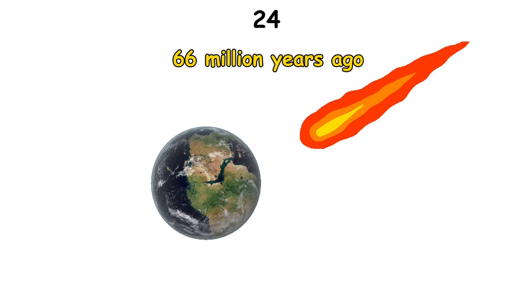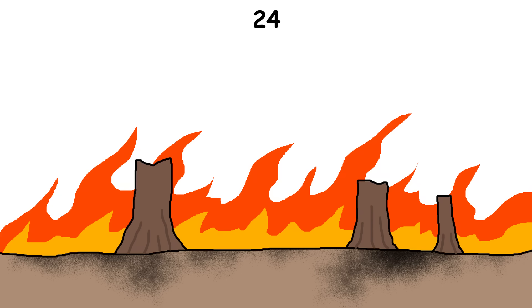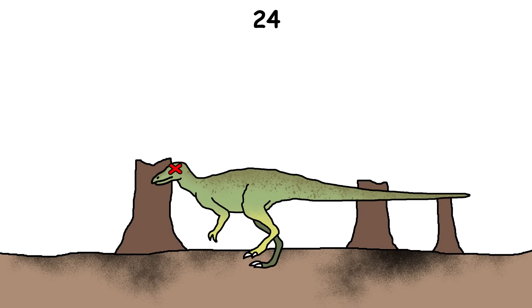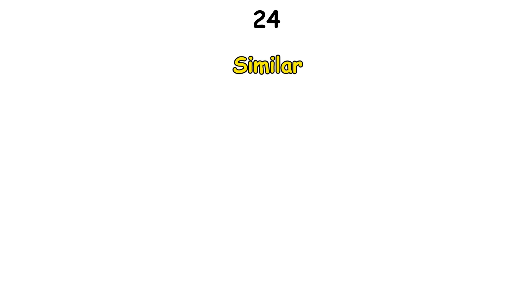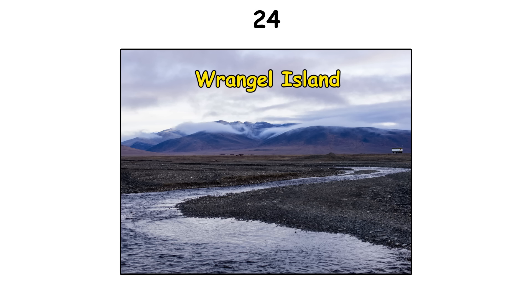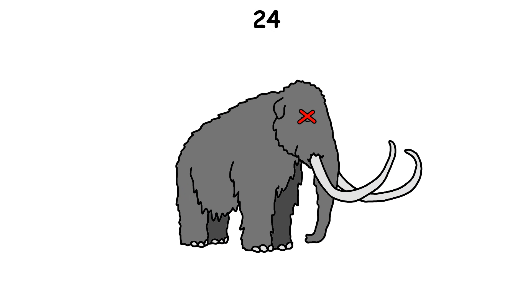The asteroid impact 66 million years ago caused a major extinction event, but dinosaurs didn't all die immediately. The extinction likely took decades or even thousands of years, as some small dinosaur species may have survived in isolated areas for a while before disappearing due to environmental changes like lack of food. This is similar to how mammoths survived on Wrangell Island, thousands of years after the rest went extinct.